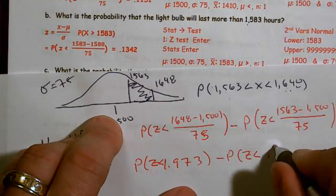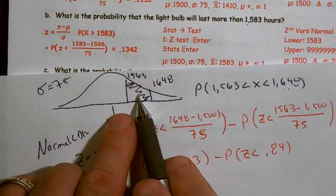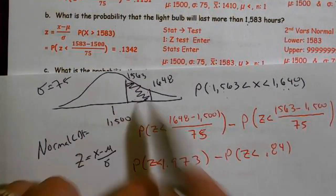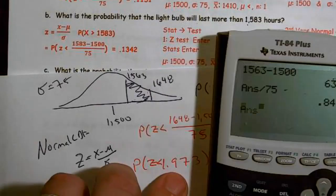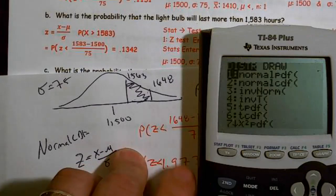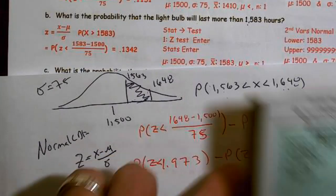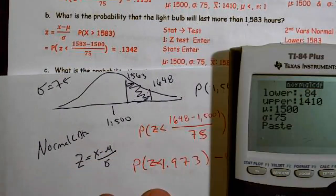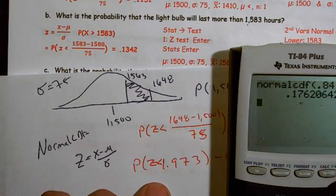Notice we have two positive Z scores, and that's because both values are above the mean. At this point, I have two Z scores and I can plug them into normal CDF. For working in between, I want normal CDF: second VARS, normal CDF. My lower bound is 0.84, my upper bound is 1.973. Since I'm using a Z score, I use mean 0 and standard deviation 1. I end up getting 0.1762.